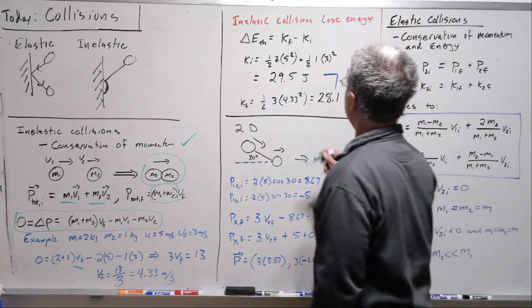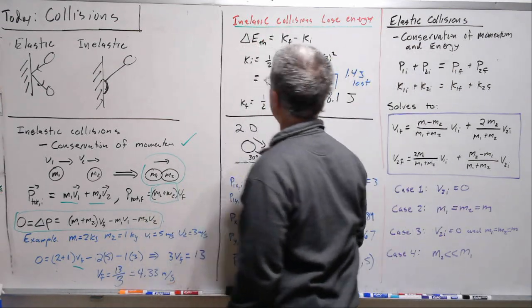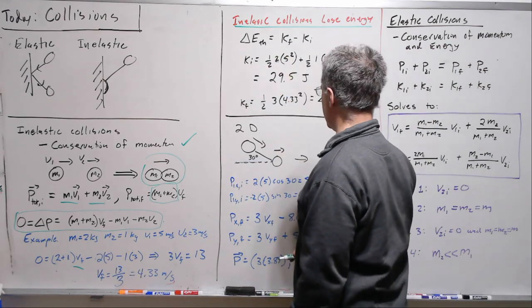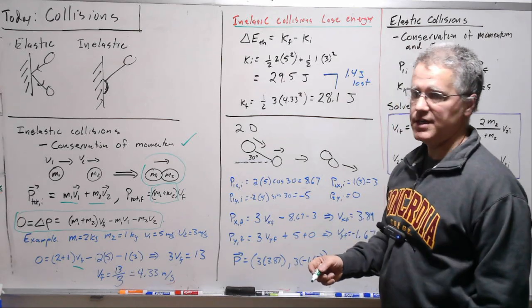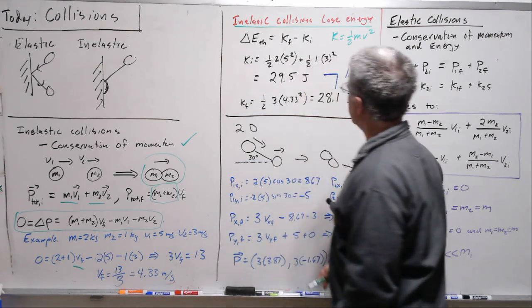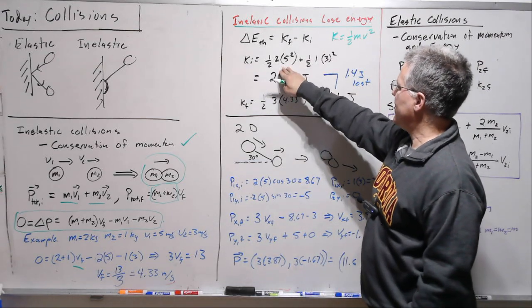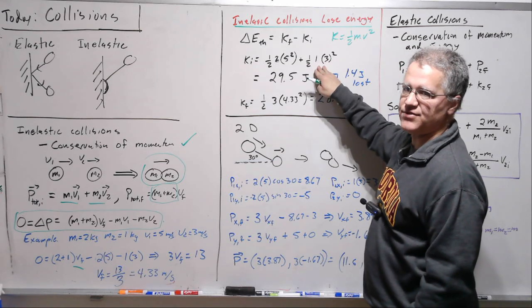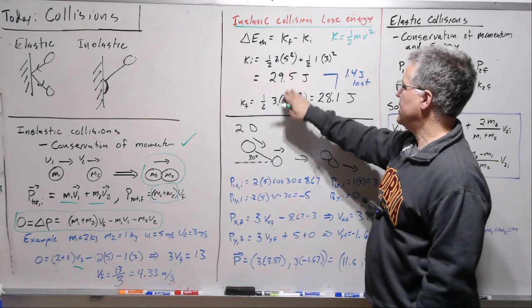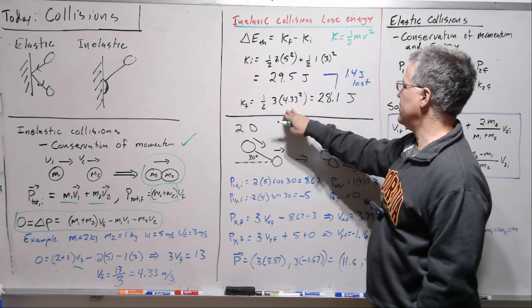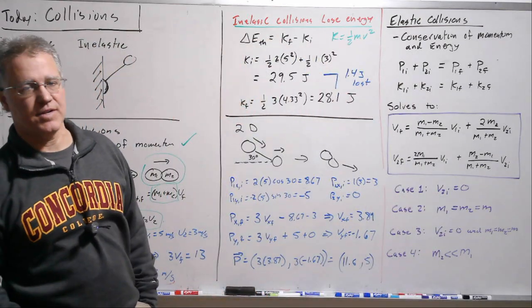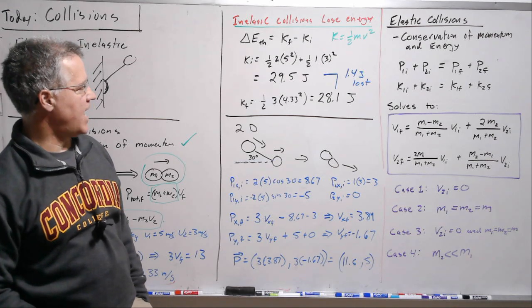Now let's check to see if energy is conserved and we said it isn't in an inelastic collision. So let's just calculate the kinetic energy of these before and after the collision. So we use 1 half mv squared, kinetic energy formula. And so initial, we have the kinetic energy of 1 plus the kinetic energy of 2, that gives us our total kinetic energy. That works out to be 29.5 joules. And then we take the kinetic energy of the final unit, works out to be 28.1 joules. So we indeed lose a little bit of energy. Energy is lost. We have less energy after than before.